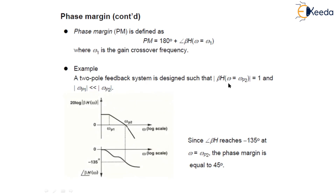We take an example of a two-pole feedback system designed such that the magnitude equals unity at ωp2, with ωp1 less than ωp2. As shown on the Bode plot, the phase angle is minus 135 degrees at ωp2, so the system is stable. The phase margin equals 180° + (−135°) = 45 degrees.